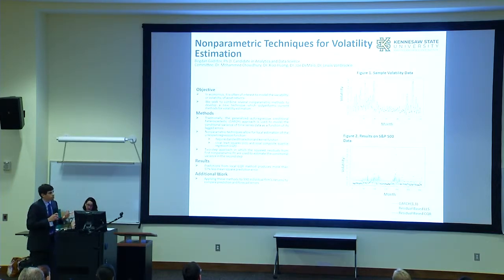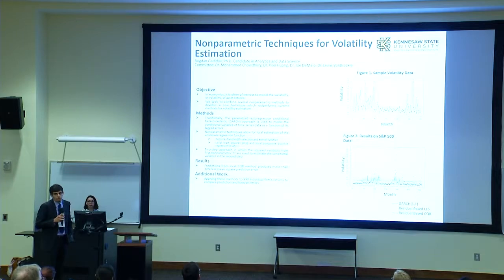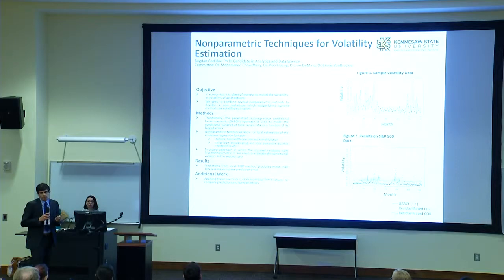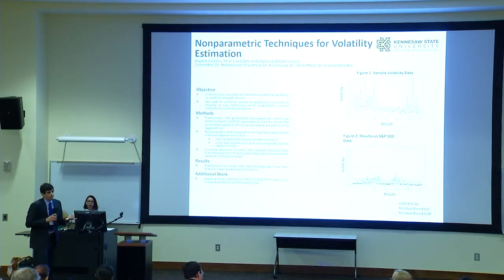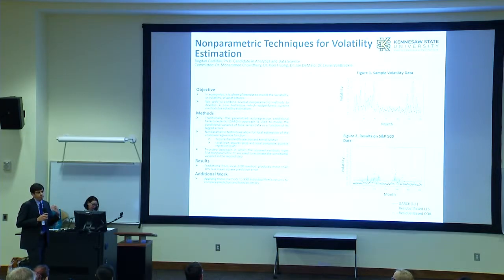Our proposed research combines two non-parametric techniques: a local least squares approach, where we locally fit a polynomial function, and a local composite quantile regression, where we locally fit quantile regression — modeling the median instead of the mean. Quantile regression is generally more robust to outliers than least squares. We use a two-step approach: in the first step, we model the returns of the data, then take the residuals and use them as an estimation for variability.